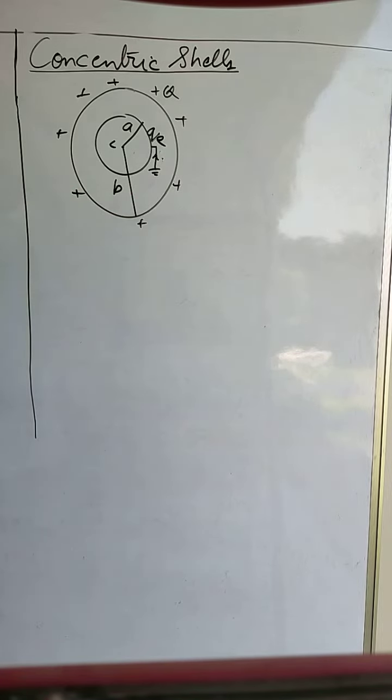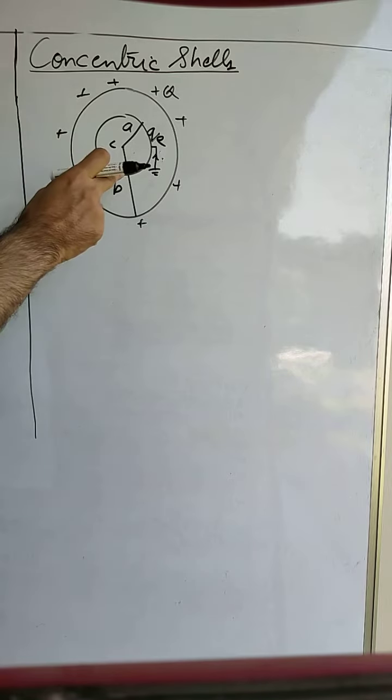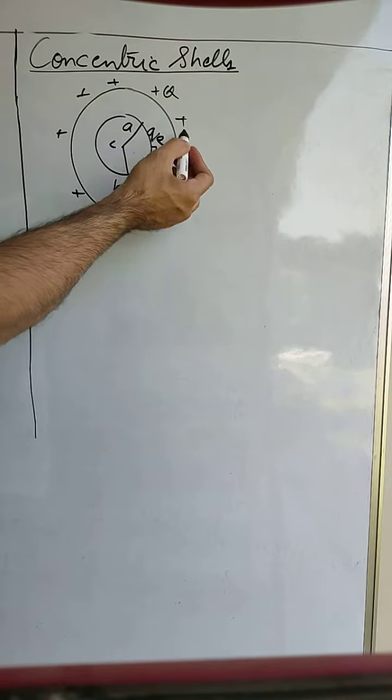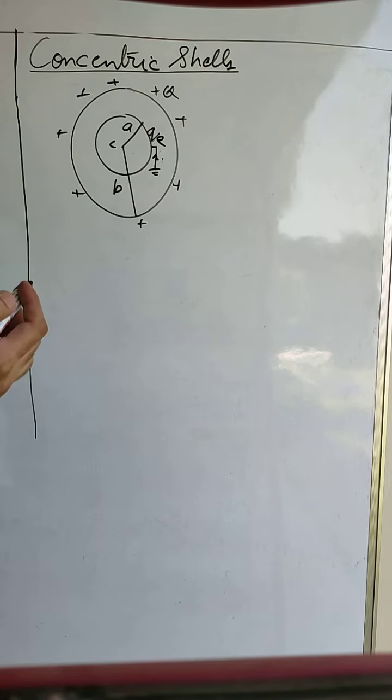Now how do we find this value of QE? In the inner shell the potential will be due to its own charge, which is QE, and the potential due to the outer shell which has charge plus Q.